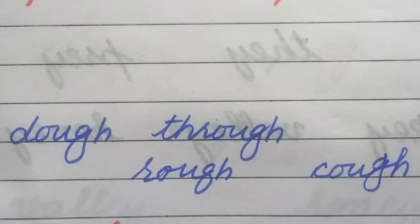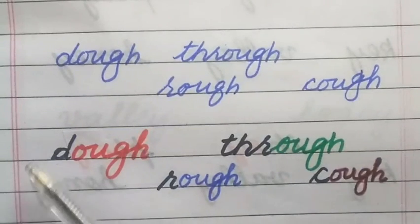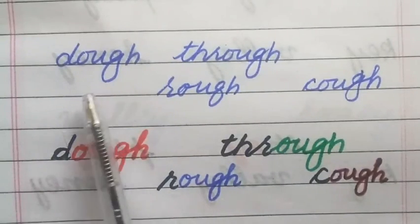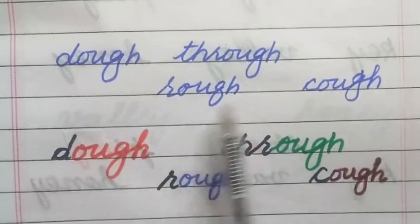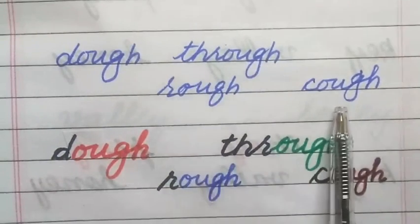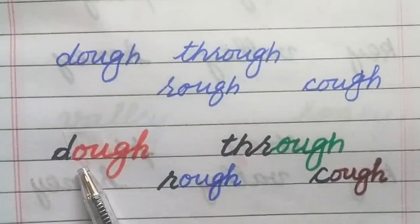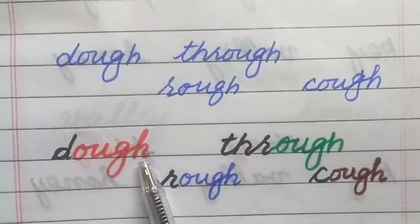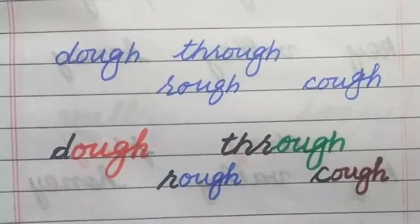Students, this is the first word: dough, through, rough, cuff. The common element in all four of these words is O-U-G-H. This is phonogram number 31.